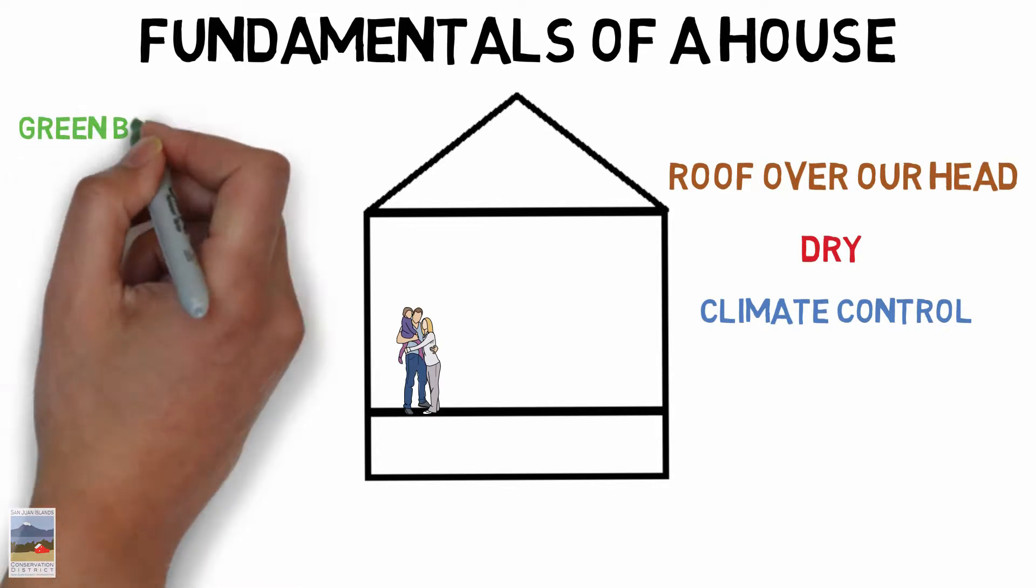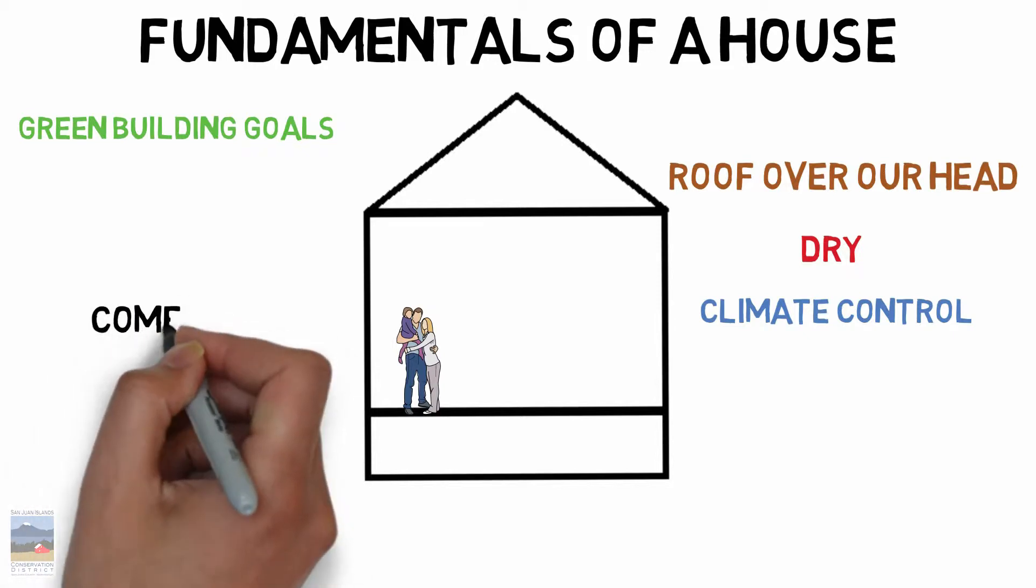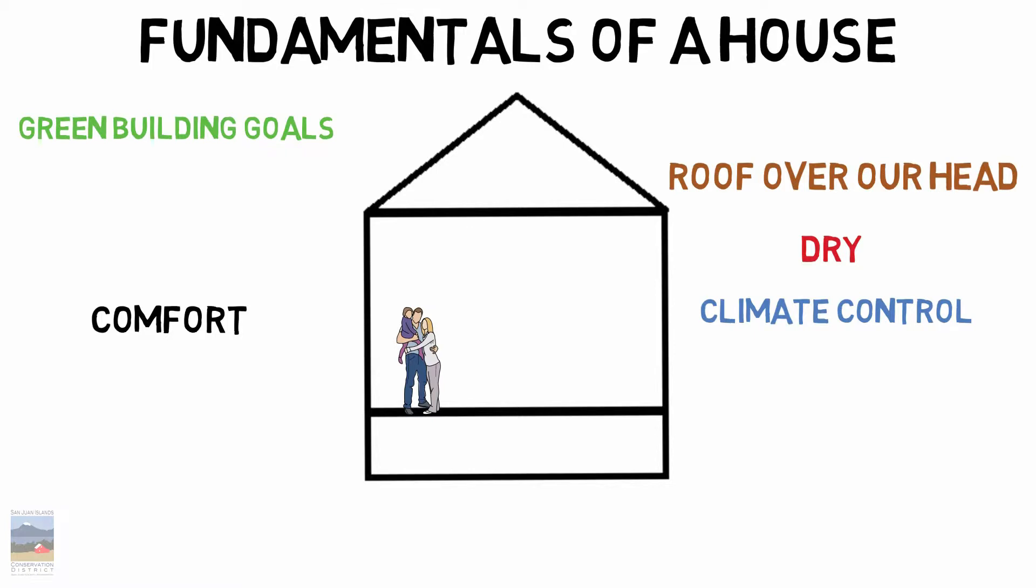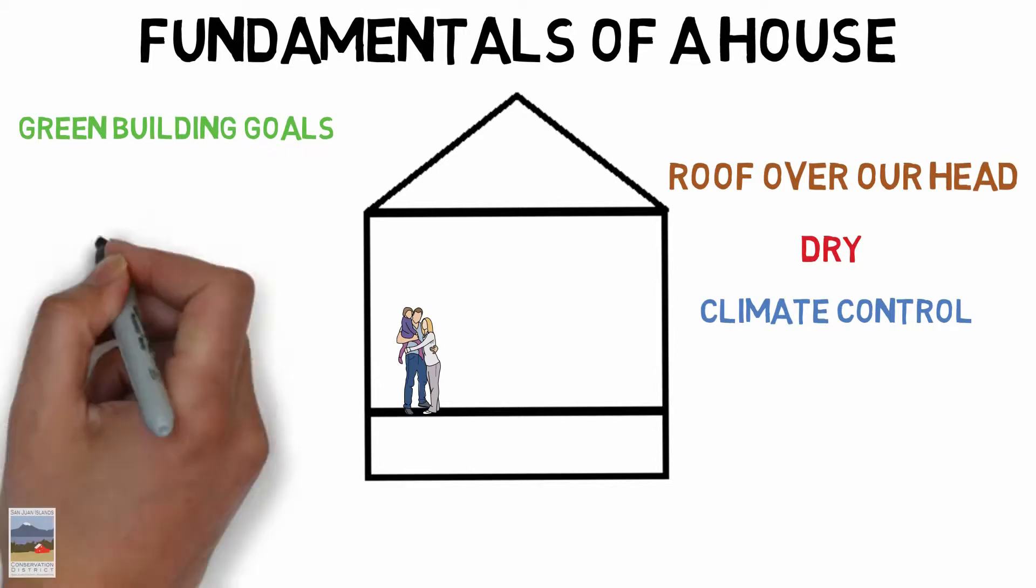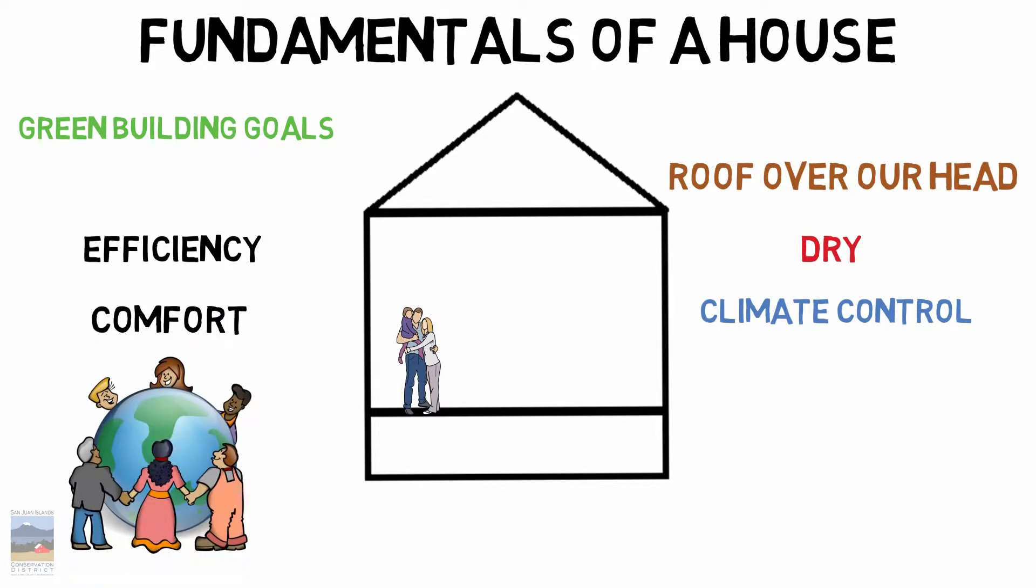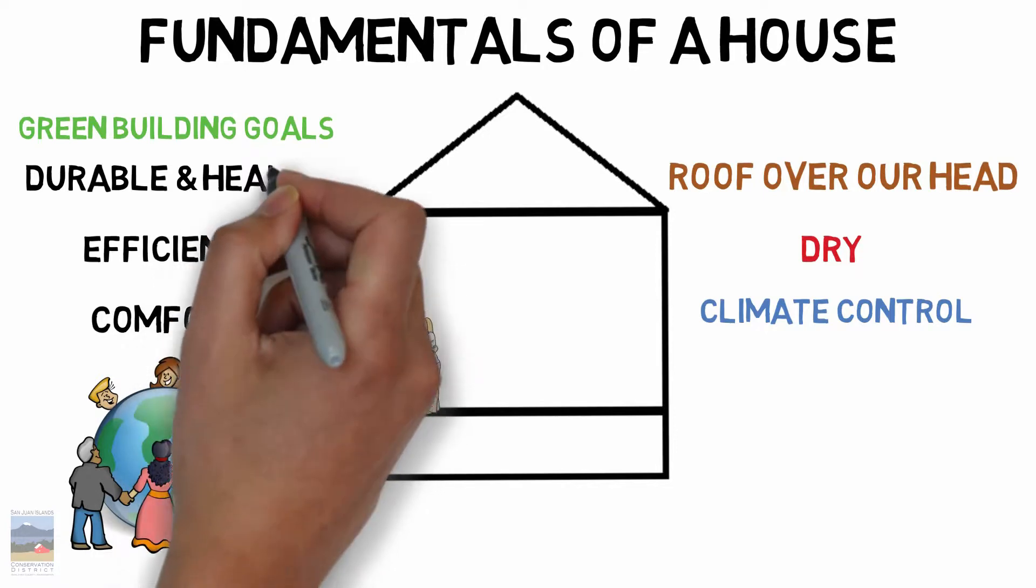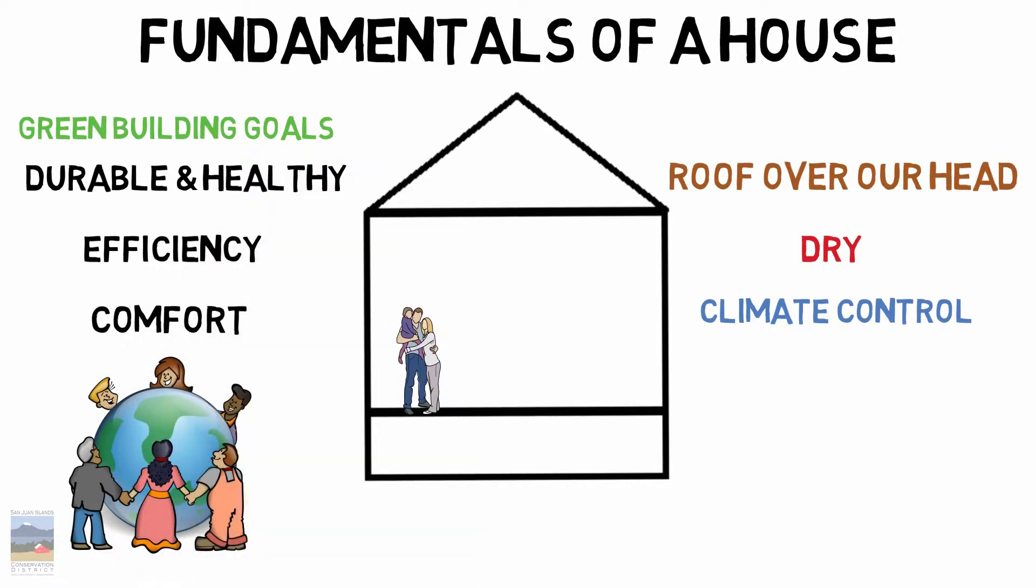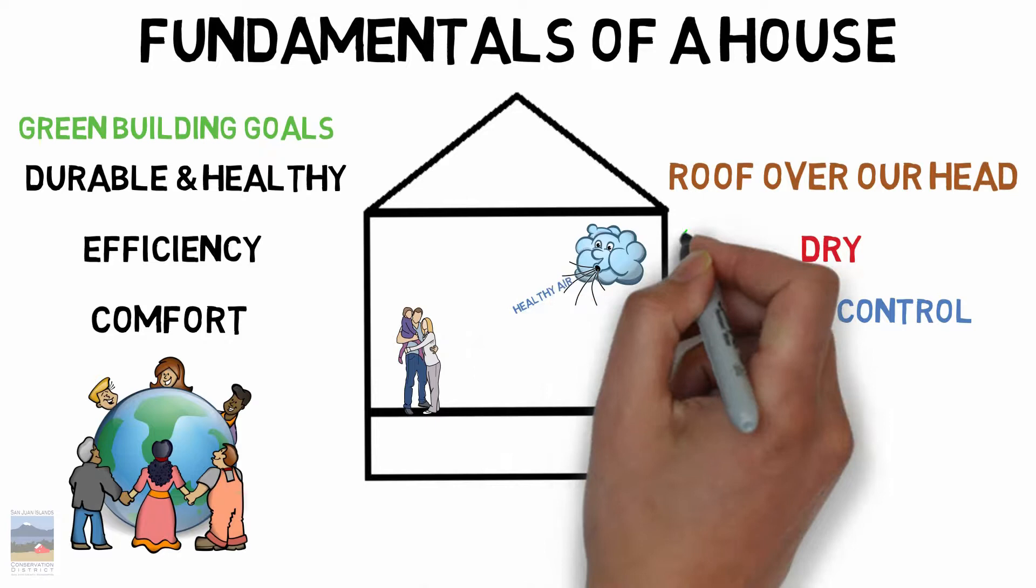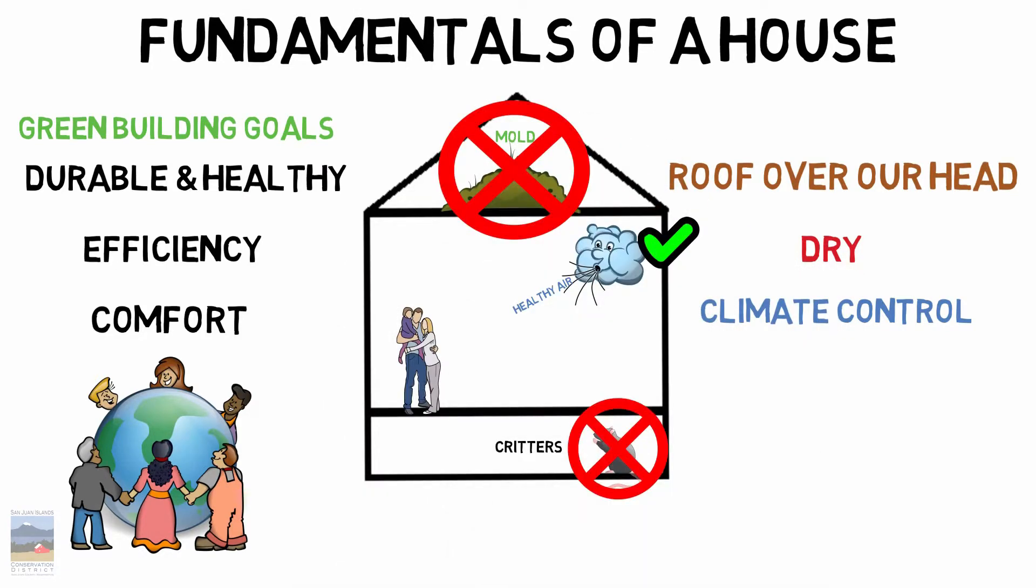So the goal with green building, if you will, or home performance is another way of looking at it, is getting the house to be climate controlled. So it's comfort, right? So that's one of the main things we're looking at is comfort. And then of course, efficiency, right? We're all here to save the planet or something. And we want it to be durable and healthy. So we want to have healthy air in there for us to live with. We don't want mold, we don't want critters in the crawl space, that kind of thing.